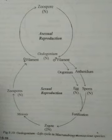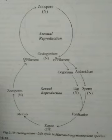Now we will look at the reproduction methods of Oedogonium. It reproduces by three methods: vegetative, asexual, and sexual reproduction.